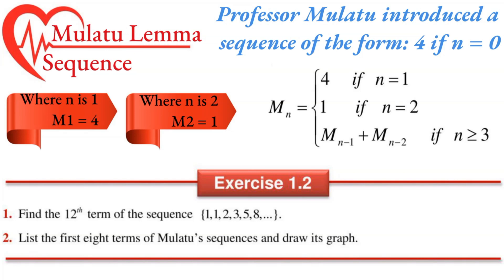Exercise 1.2: Find the first 12 terms of the sequence. List the first several terms of the sequence and draw the graph. The initial conditions are m1 equals 1, m2 equals 1, m3 equals 1, and the recursion formula is mn equals m(n-1) plus m(n-2) for n greater than or equal to 3.